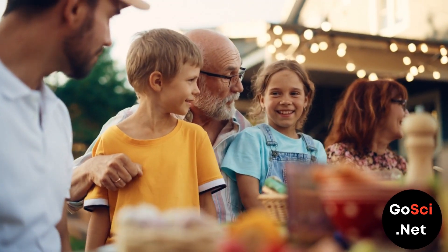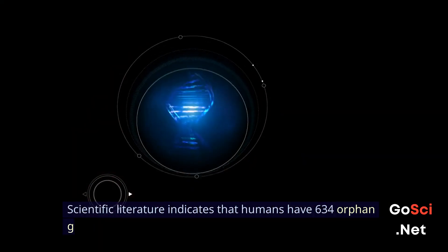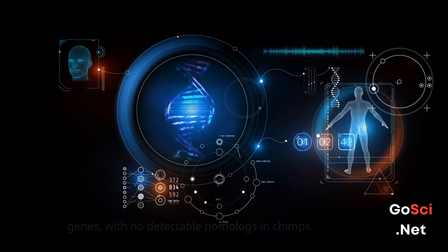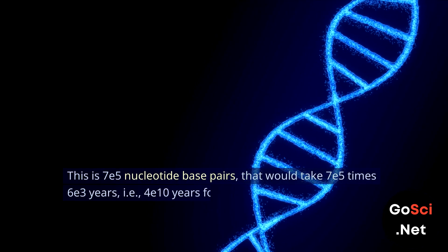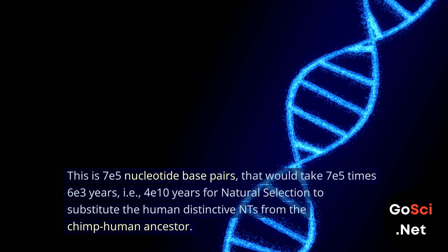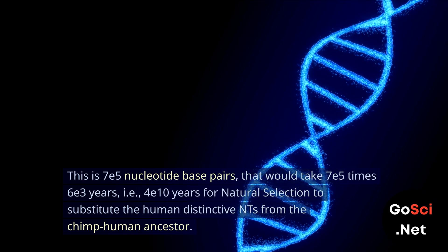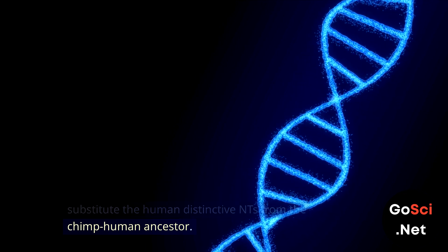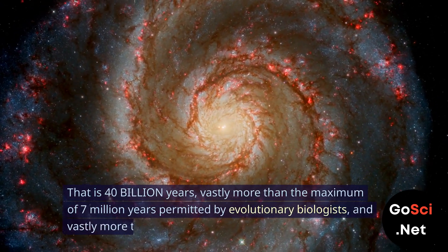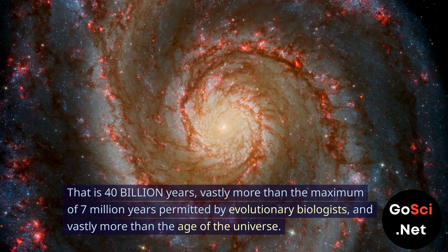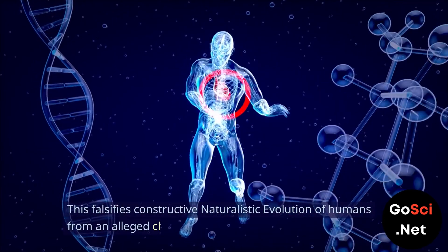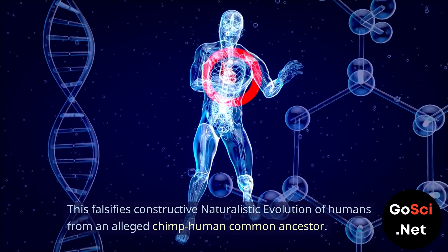Point 9: Human Evolution. Scientific literature indicates that humans have 634 orphan genes with no detectable homologues in chimps. This is 7 × 10⁵ nucleotide base pairs, that would take 7 × 10⁵ × 6 × 10³ years, i.e., 4 × 10¹⁰ years for natural selection to substitute the human-distinctive NTs from the chimp-human ancestor. That is 40 billion years, vastly more than the maximum of 7 million years permitted by evolutionary biologists, and vastly more than the age of the universe. This falsifies constructive naturalistic evolution of humans from an alleged chimp-human common ancestor.